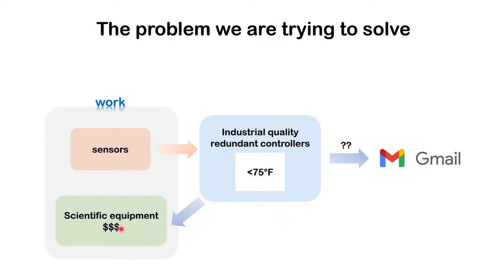That 75°F threshold is recommended for the scientific equipment that costs a lot of money to maintain and repair, so having a good ambient temperature of less than 75 degrees Fahrenheit is desired. While I was at work, this was very easy to monitor.